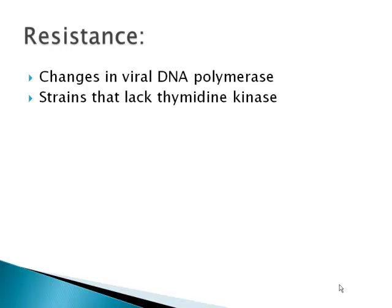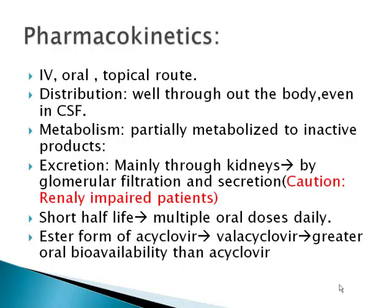Resistance is usually due to either changes in the viral DNA polymerase enzyme, or because some strains — approximately 50% of herpes strains — actually lack thymidine kinase, so they would have resistance against this drug. Pharmacokinetics: acyclovir can be given IV, orally, or through topical administration. Distribution is well throughout the body, even in CSF. It is partially metabolized to inactive products, and excretion is mainly through kidneys by glomerular filtration and secretion. It has a very short half-life, which is why multiple oral doses are given daily. This problem has been solved by valacyclovir, the ester form of acyclovir, which has greater oral bioavailability.